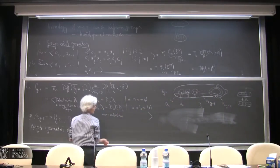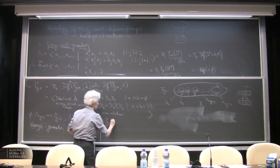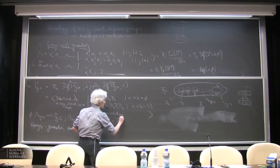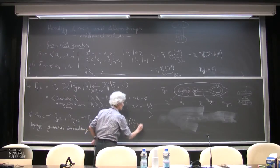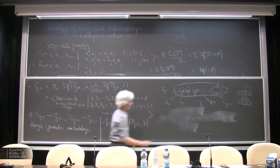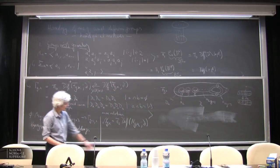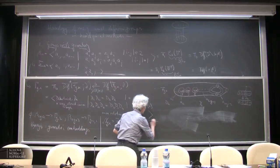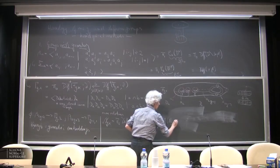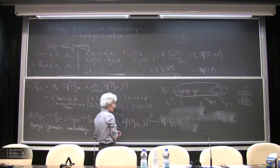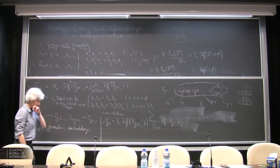I also want to introduce another group which is the analog for non-orientable mapping class groups. Here I have π₀ of the diffeomorphisms of a non-orientable surface, which is given by the number of crosscaps and k boundary components. Again, there is the diffeomorphism group, a canonical map down, and again this is a homotopy equivalence as soon as the Euler characteristic is negative.